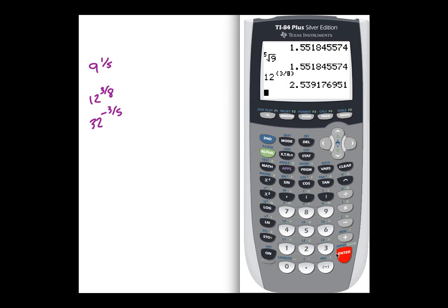Or 32 to the negative 3/5, same exact keystrokes. 32 to the parentheses, and then the negative sign is that one down there on the bottom by the decimal, negative 3 divided by 5. Again, you don't have to close the parentheses if you don't want to, and there's your answer. So that's all there is to it.